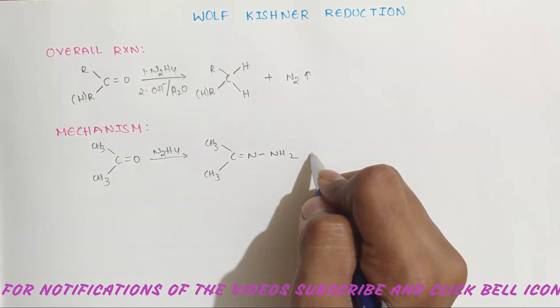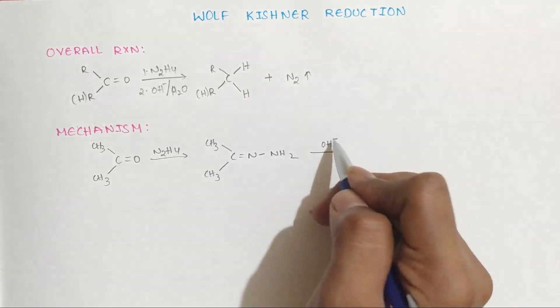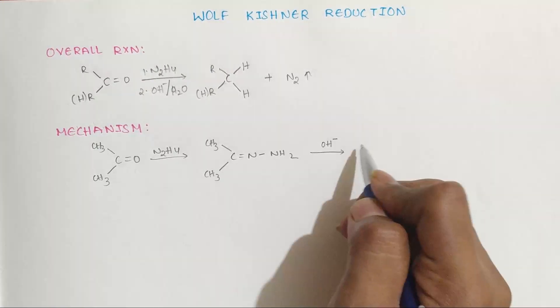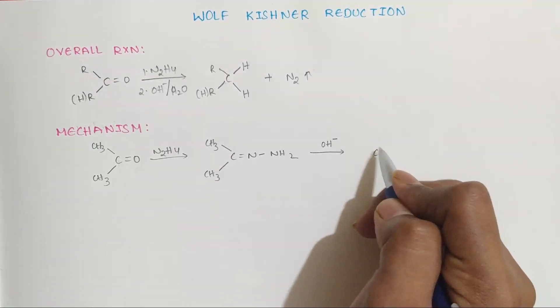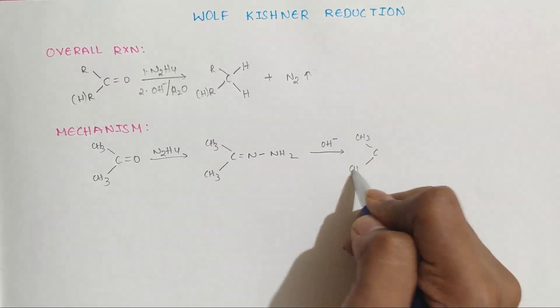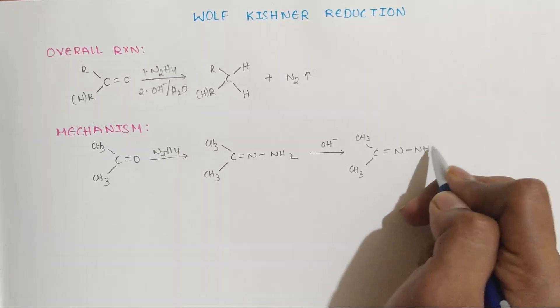Then in presence of OH-, OH- will take H from NH2, which is an acid-base reaction, and it becomes C double bond N single bond NH-.